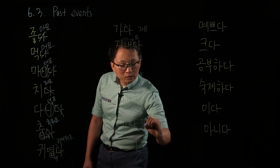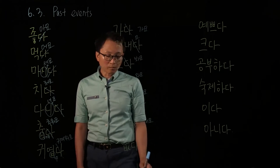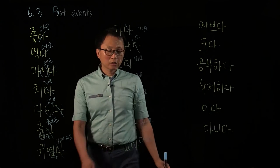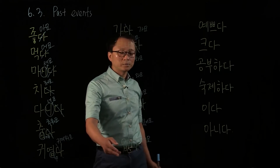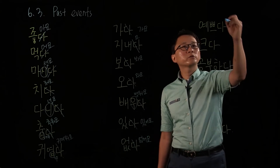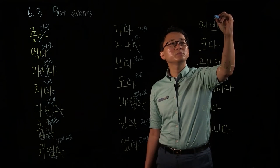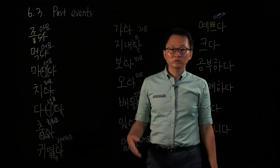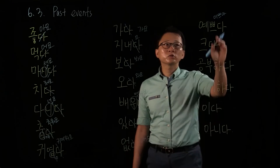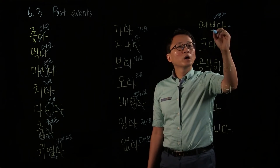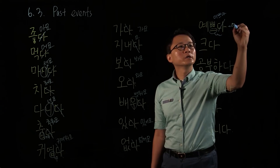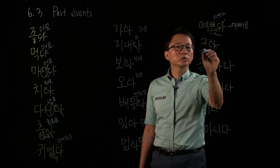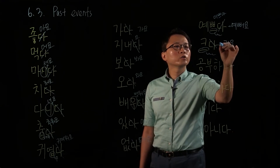있다 — 있어요, right? 없다 — 없어요. 있다 means to exist or to possess; 없다 means not exist, not possess. 예쁘다 — to be pretty. Many Koreans pronounce this 이쁘다, and 이쁘다 is also accepted as the standard form now. The 으 drops, so 예뻐요. 으 ending words — we drop the 으. 커요 — to be big.